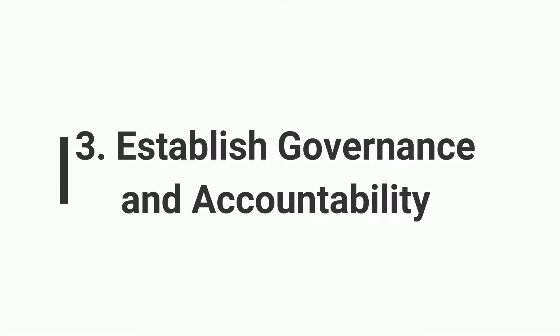3. Establish governance and accountability. Strong governance and accountability are central to the effective implementation of a sustainable development strategy, and to embedding sustainability in any organization. Good governance is about reaching sound decisions, putting measures in place to implement them and making individuals and organizational structures accountable for delivery. An overarching governance system will provide oversight, and support consistent delivery across all material issues.